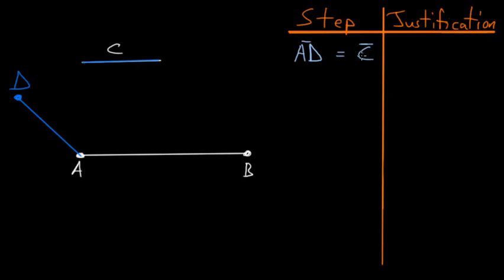The reason that we can do this is due to Book 1, Proposition 2, which says that we can construct at a given point a line equal to a line that we were given. So at this point A, we constructed a line equal to this line C.